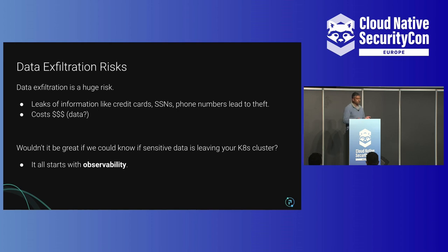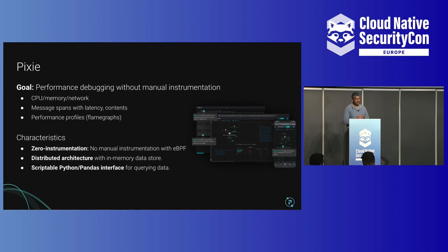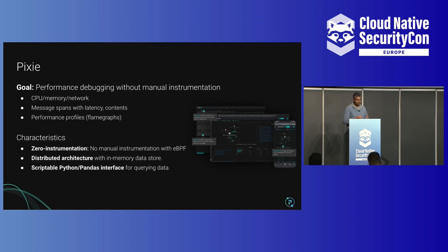Wouldn't it be great if sensitive data leaving your cluster could be found in a transparent way? We say it all starts with observability, mostly because Pixie is originally a performance observability tool and we were trying to extend it to do more use cases. So what is Pixie? We started out with the goal of performance debugging without manual instrumentation — things like CPU, memory, network, message fan-outs, latencies, and performance profiles.